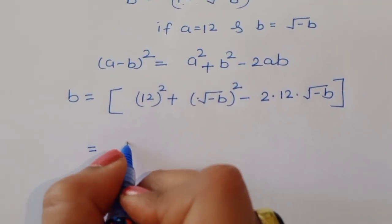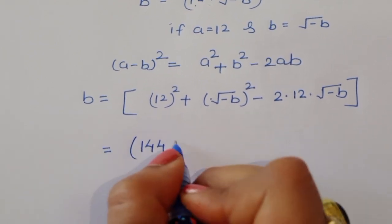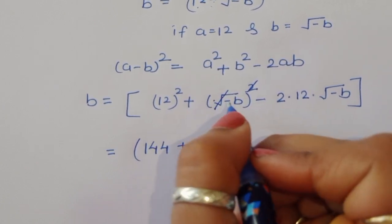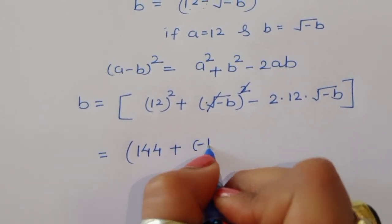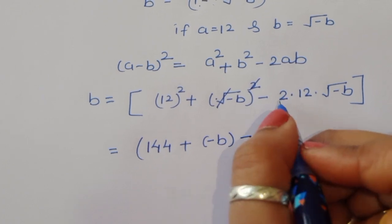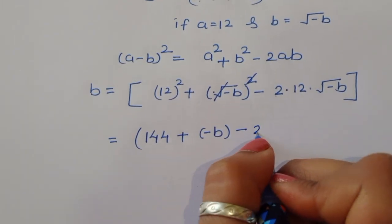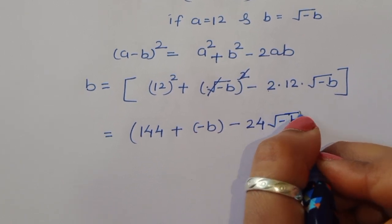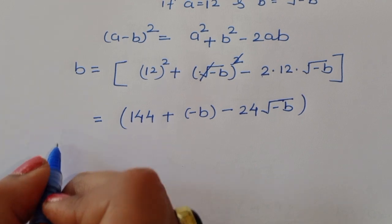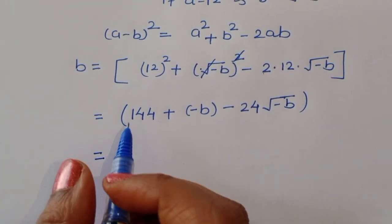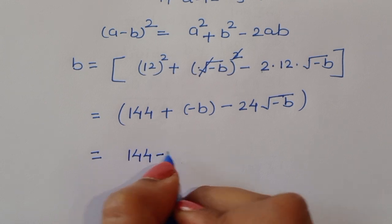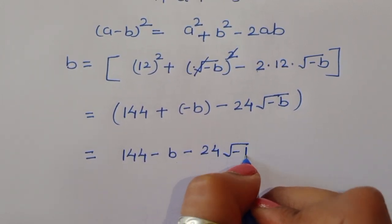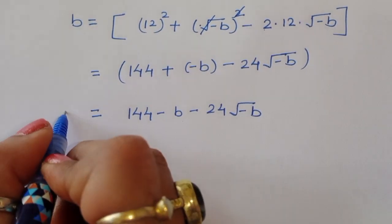Now 12² = 144, and (√(-b))² = -b. So we get b = 144 + (-b) - 24√(-b), which simplifies to b = 144 - b - 24√(-b).